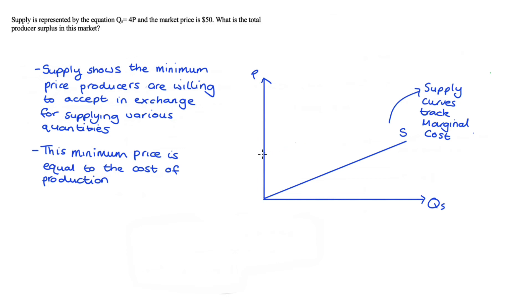So we can take the height of the supply curve at each quantity to be tracking the marginal cost for that quantity. On our diagram, the price would be here at $50. If we substitute the price of 50 into our equation, we can see that the quantity supplied at 50 is 200. So in this market, 200 units will be supplied at this price.